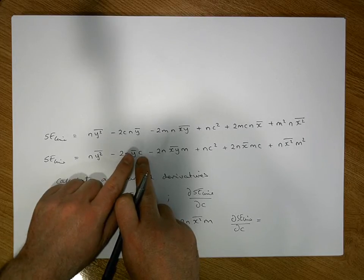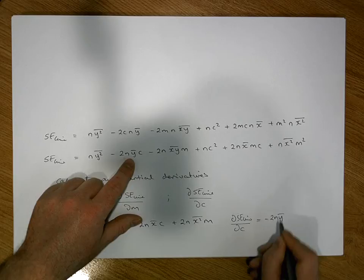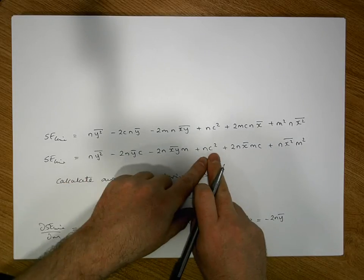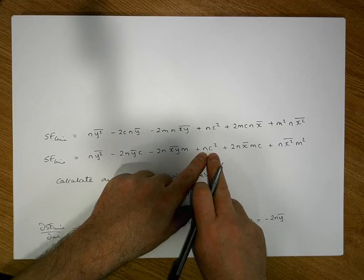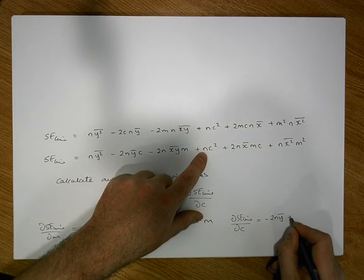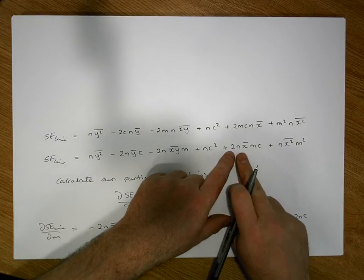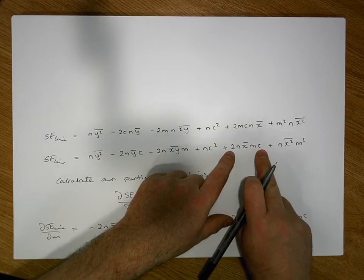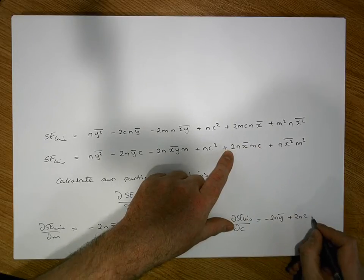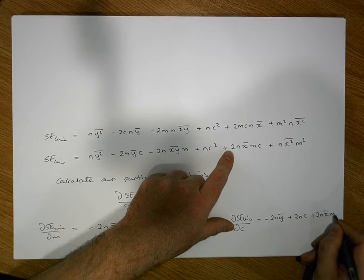This gives us minus 2nȳ, which is just a constant term. When we differentiate c² it gives us 2c·n, so that's plus 2nc. And when we differentiate this term, the derivative of c is just 1 times the constant, giving us plus 2nx̄m.